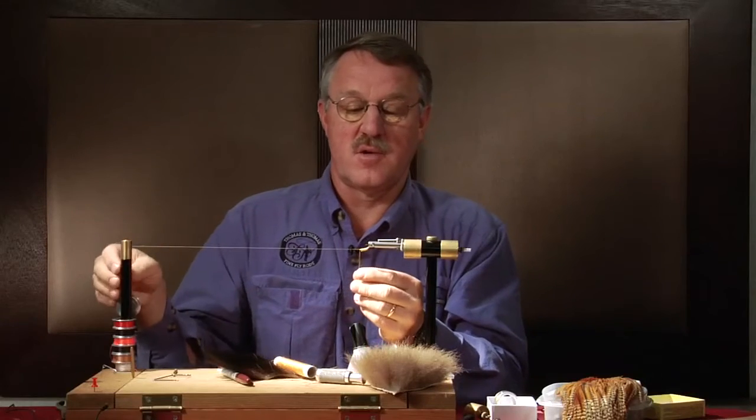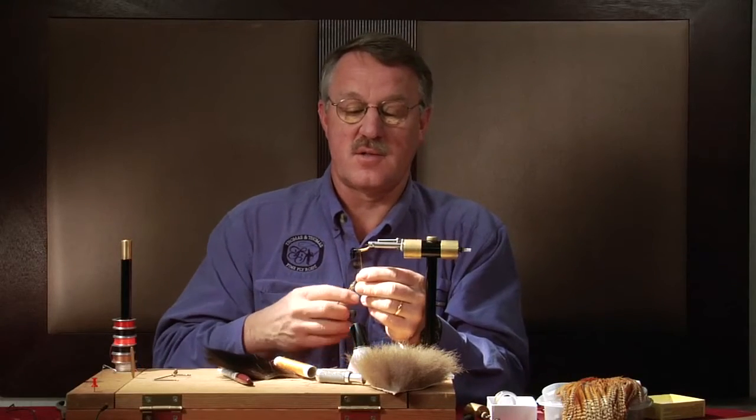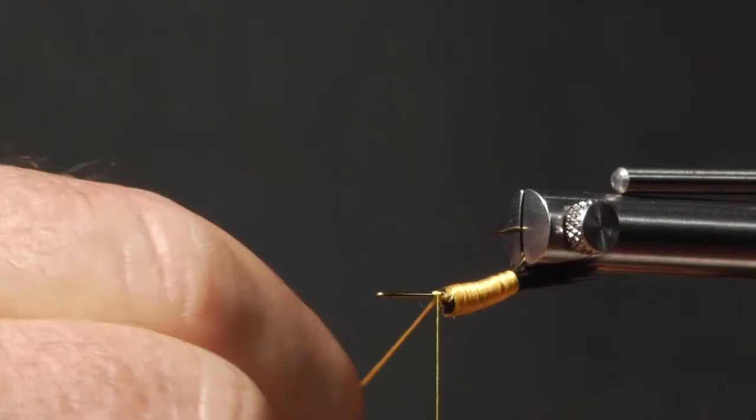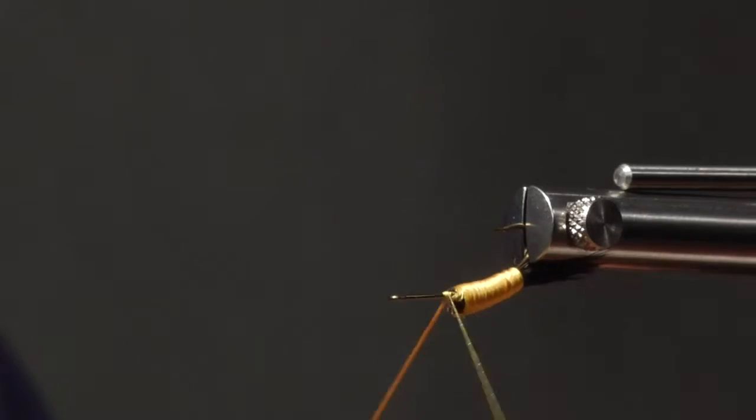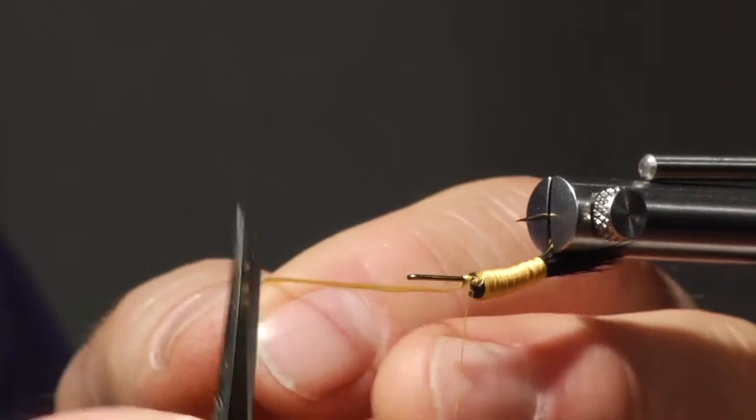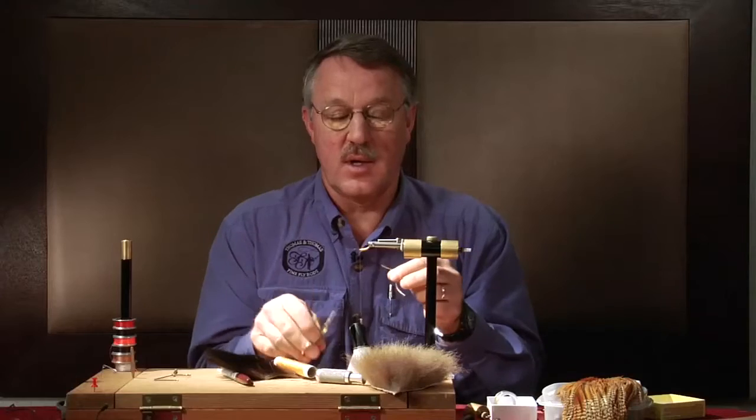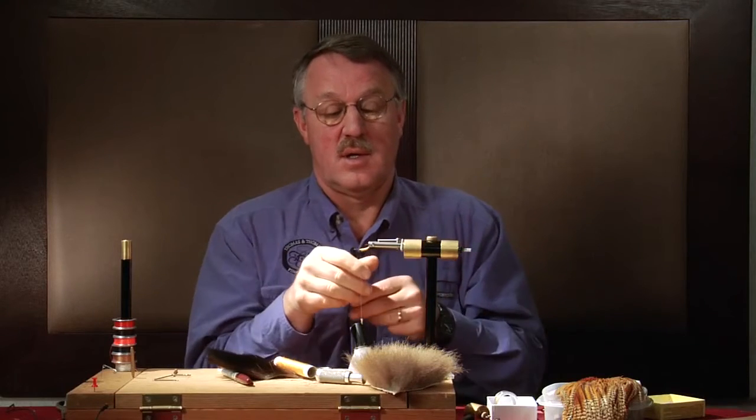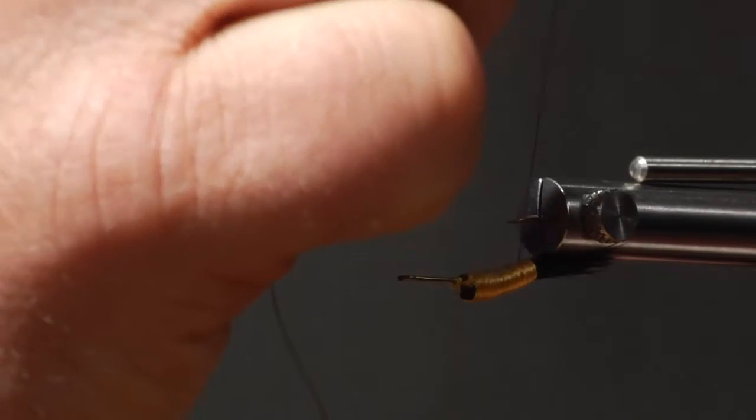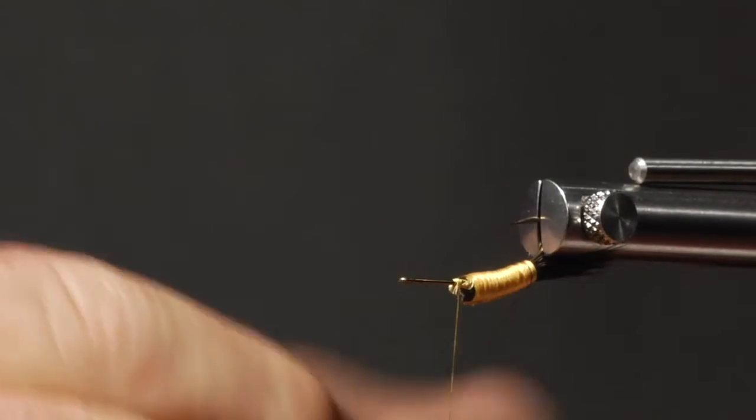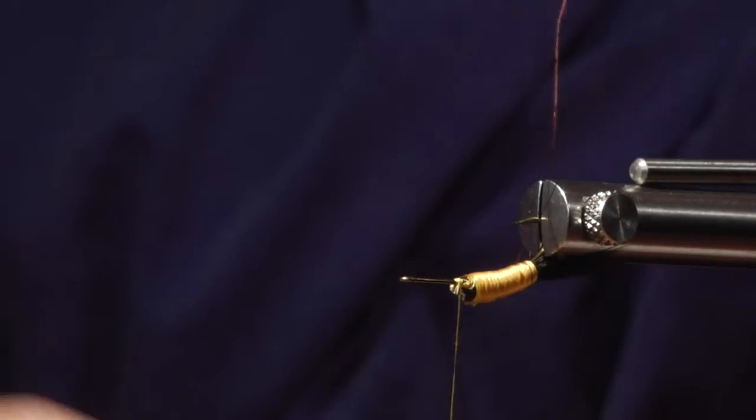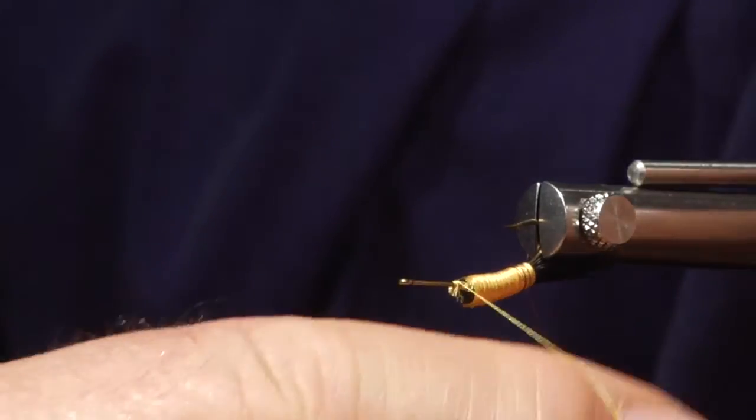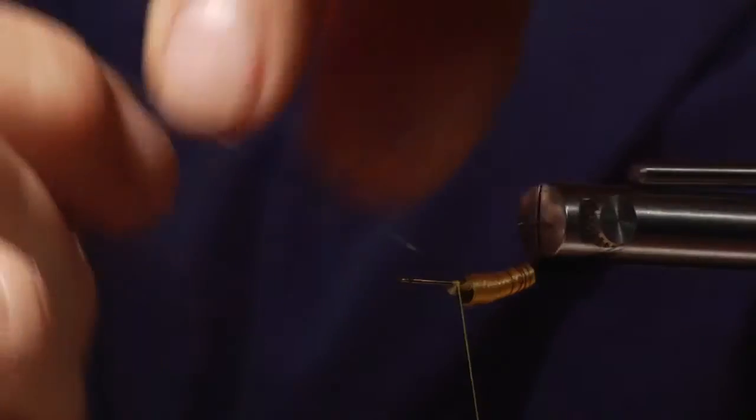Golden stoneflies are among the most beautiful stoneflies there are. They're very colorful and they take on many different shades of color, from dark brown to amber to golden. And they're very detailed. They have distinct ribbings on their abdomen, their thorax is very colorful, their heads are broad. And we're trying to get a profile here of a golden stone that trout really think is real. And this pattern works very well for that.